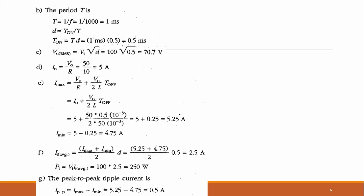The average input current equals (I_max + I_min)/2 multiplied by duty cycle 0.5, giving 2.5 ampere. Input power equals input voltage times input current: 100 times 2.5 equals 250 watts. The peak-to-peak ripple current equals I_max minus I_min: 5.25 minus 4.75 equals 0.5 ampere.